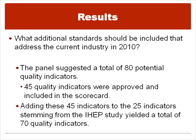Research question two was what additional standards should be included. The panel of experts suggested that a total of 80 quality indicators would be important to examine. Out of those 80, they agreed upon 45 that needed to be included in the quality scorecard. After adding these 45 indicators to those 25 from the original IHEP study, that yields a total of 70 quality indicators.